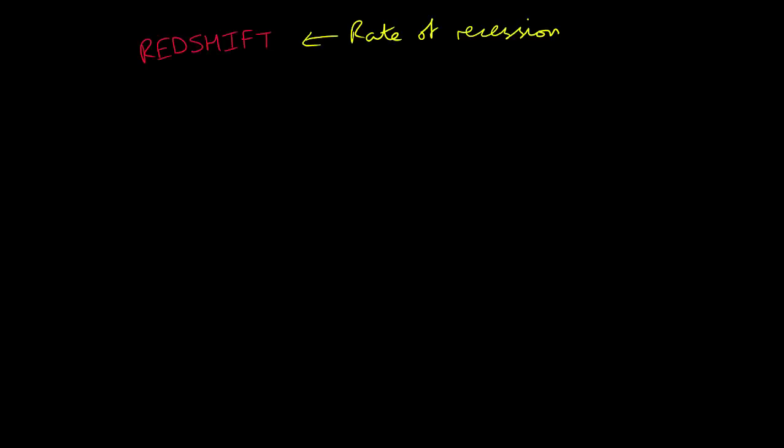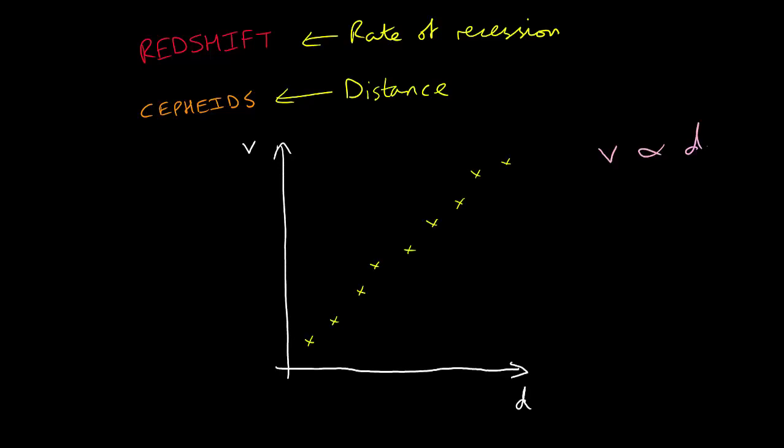We can measure the distance to a galaxy using Cepheid variable stars. These two quantities can be plotted on a graph producing an approximately linear relationship. Therefore, we can deduce that recessional velocity is proportional to distance.